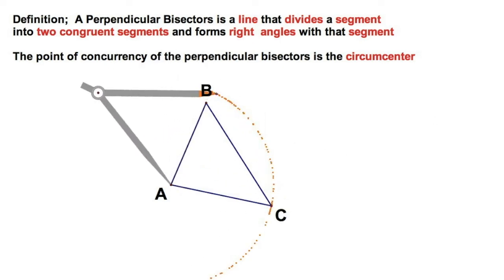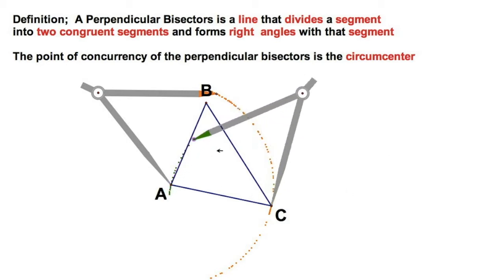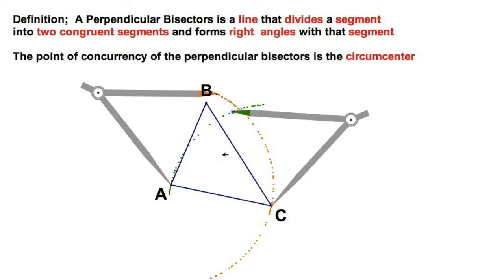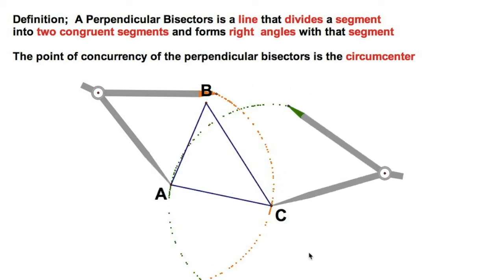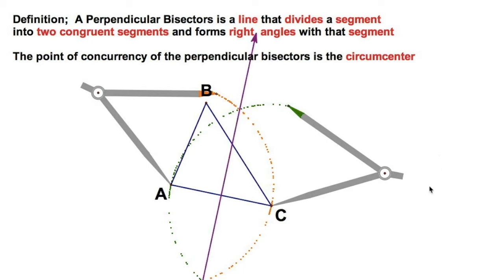Then you reverse the compass — put the needle on C and gap it back to A. This is old hat by now. We line up our straight edge with our two points of intersection. And there you go — that's our line, that's a perpendicular bisector.